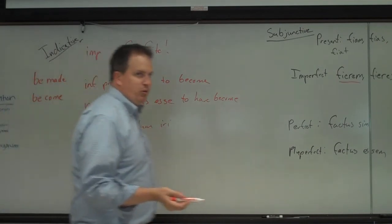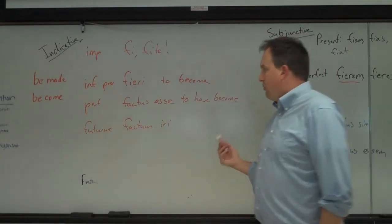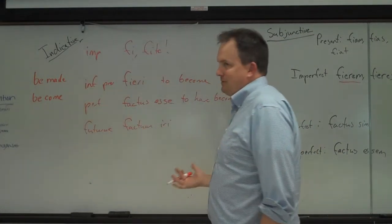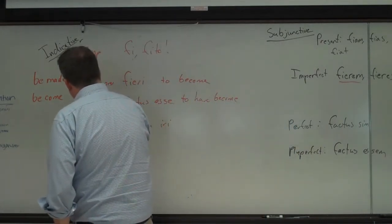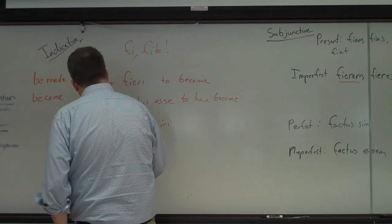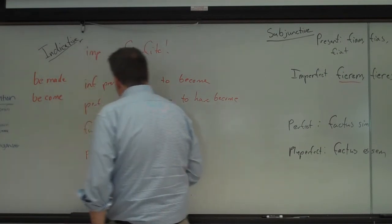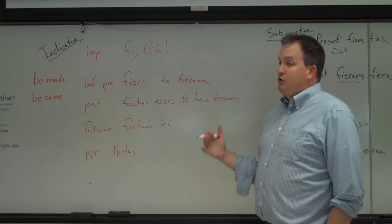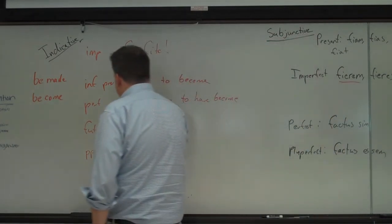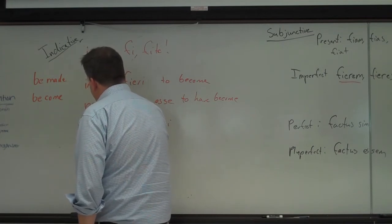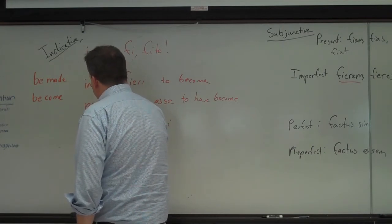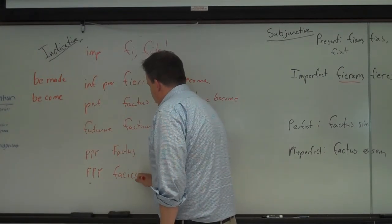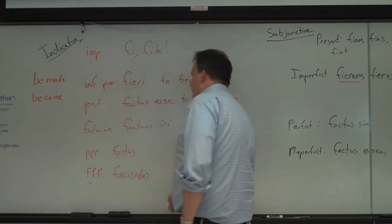And then for the participles, of course, you just use the forms of factus. There's no PAP. They don't use the PAP. They have a perfect passive participle, it will just be factus, just like facio. And then the future passive, or the gerundive, would just be - so the future passive participle would be, the gerundive faciendus, which is just like facio. And there we go.